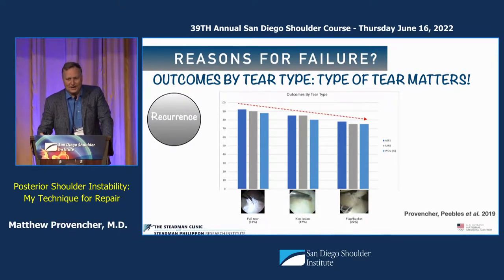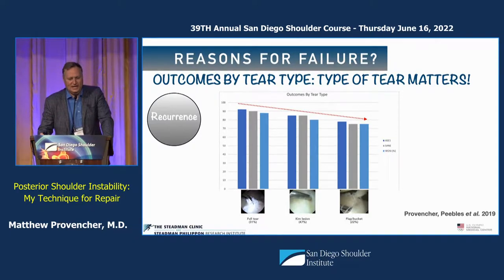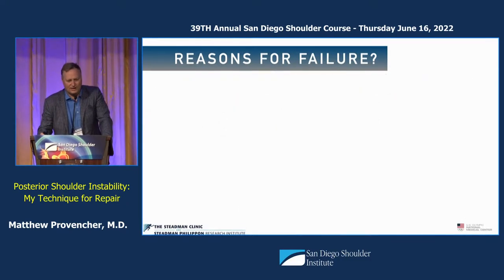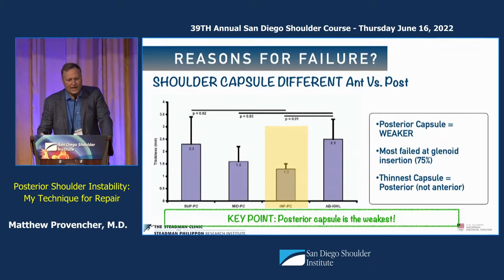Tear type matters, just as we've shown. ALPSA is not as good if you have that for anterior instability. If you have a bucket handle or a Kim lesion, those outcomes are not as good based on tear type. As we published, tear type matters especially posteriorly — whether you have more of a bucket handle or a flap.